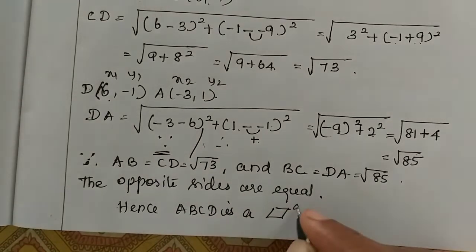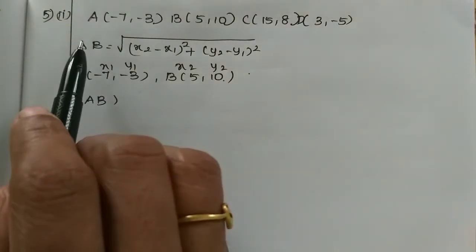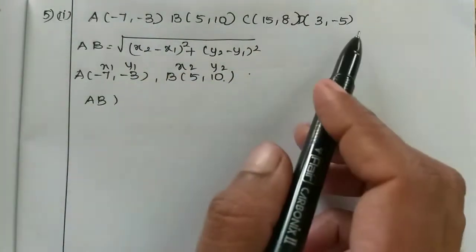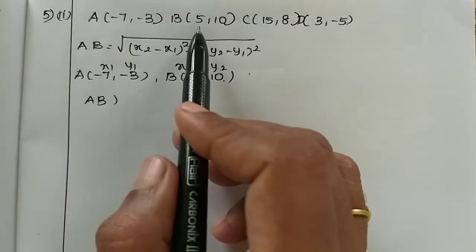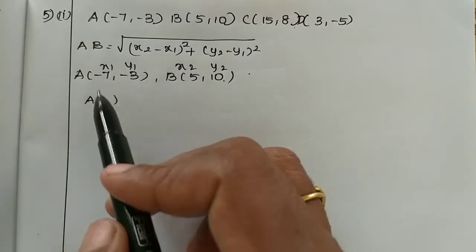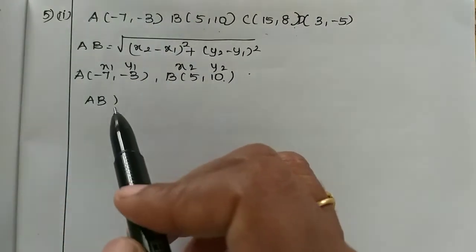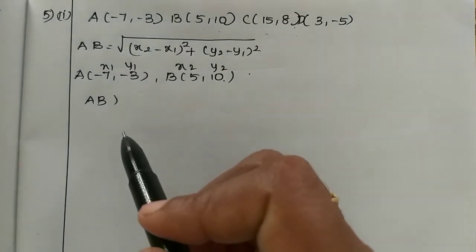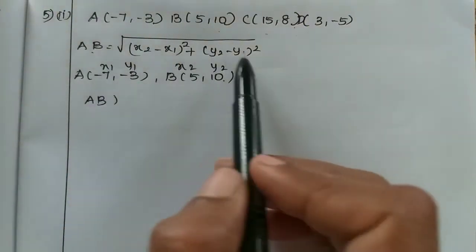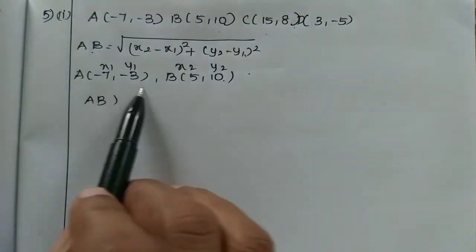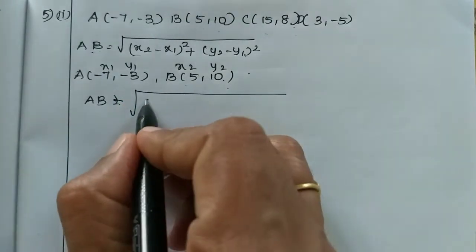You can see the parallelogram. ABCD has 4 points — 4 vertices. In the first sub-problem, ABCD has 4 sides AB, BC, CD, DA with opposite sides equal. First, AB length is found using the distance formula. AB points are taken and the distance is computed.